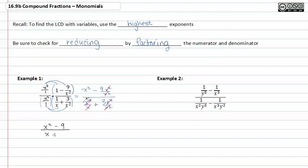plus three. We can't stop here because we have to check for reducing by factoring. The numerator is the difference of squares, which factors to x plus three, x minus three, and the denominator doesn't reduce by factoring, so we just leave it as x plus three. When we do this, it's easy to see that the x plus threes divide out, and my final answer is x minus three.